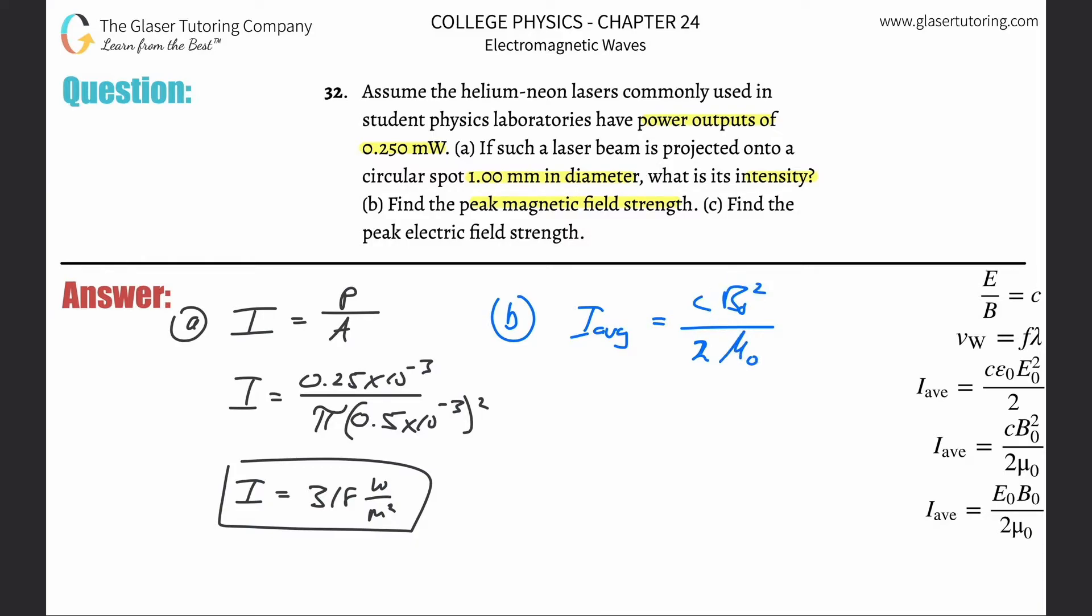So if I want to find the magnetic field strength here, what I need to do, I do a little cross multiplication, bring the permeability of free space out, bring the two out, bring the C on down to the bottom, and square root both sides, so that you can get rid of the square. See how nice and quick that is.